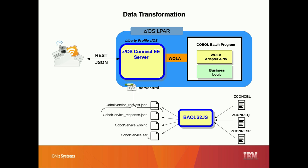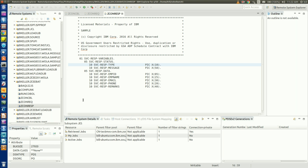After that, we update our ZOS Connect server configuration XML file so it knows how to handle this transformation. So let's switch back to ZOS Explorer now and see how this is done.